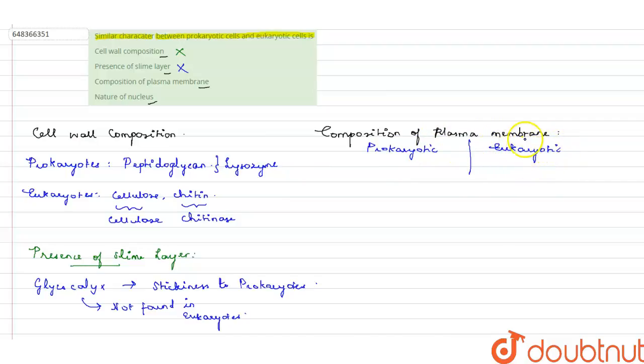Prokaryotic plasma membrane has negatively charged lipids like phosphatidylglycerol, cardiolipin, and phosphatidylserine. These are all negatively charged lipids.